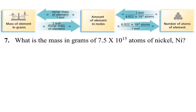Alright, so now we're going to take a look at a problem that is a little bit more complex than the ones that we've been looking at so far. This problem is asking us to find the mass in grams of a given number of atoms of our element nickel. So the mass in grams of 7.5 times 10 to the 15 atoms of nickel. So now what we have to do is we have to essentially follow a two-step process.